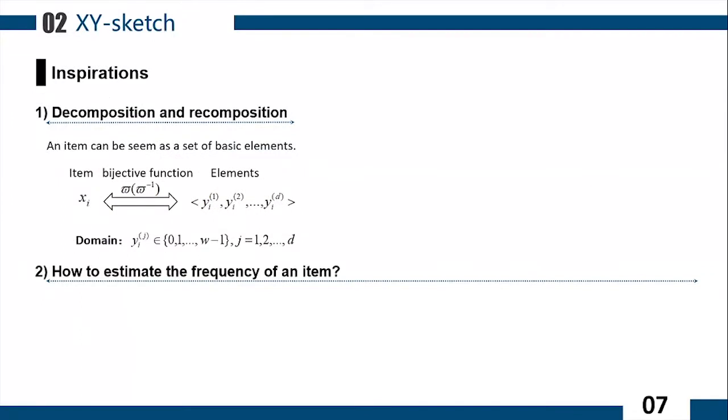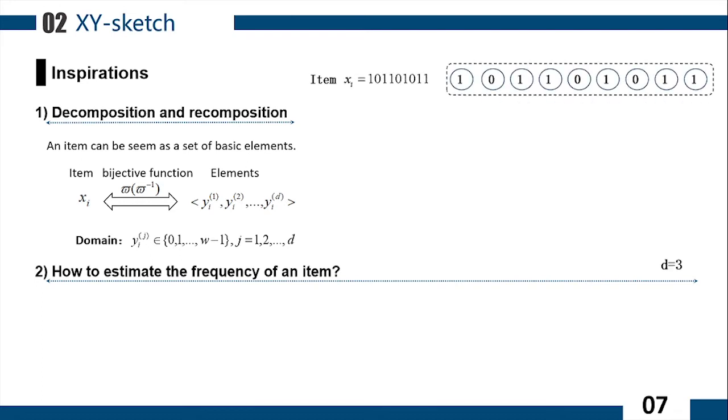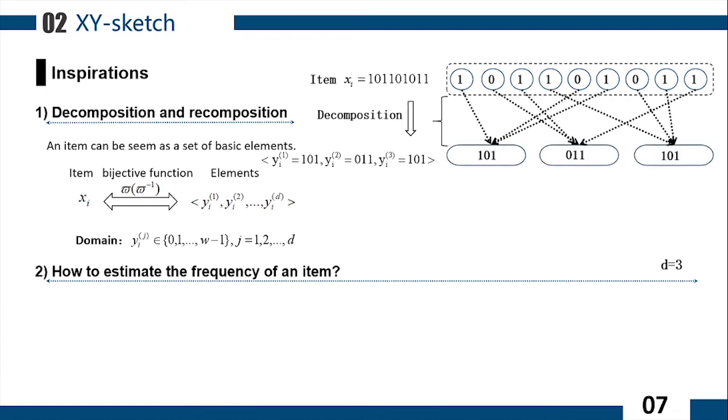Then, we show our new method, XY-Sketch. First of all, we introduce two inspirations of XY-Sketch. We found that an item can be seen as a set of basic elements. For example, item 363 can be decomposed into 535 by the bijective function, and we call 535 the basic elements.